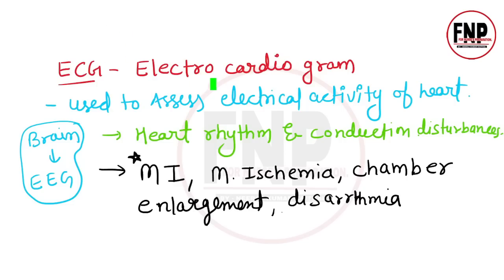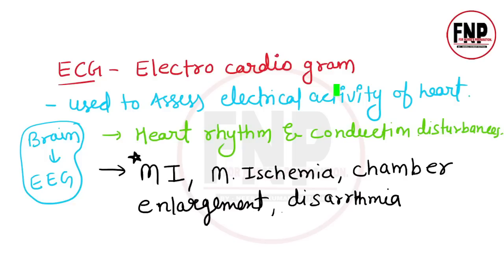ECG का full form है electrocardiography और इसे जिस machine से किया जाता है उसे electrocardiogram machine कहते हैं। ECG process द्वारा heart की electrical activities को graph paper पर record किया जाता है। इससे heart rhythm and conduction disturbance, myocardial infarction, myocardial ischemia, chamber enlargement, और dysrhythmia जैसी conditions diagnose की जा सकती हैं। Brain की electrical activity record करने के लिए EEG यानि electroencephalogram procedure use किया जाता है।